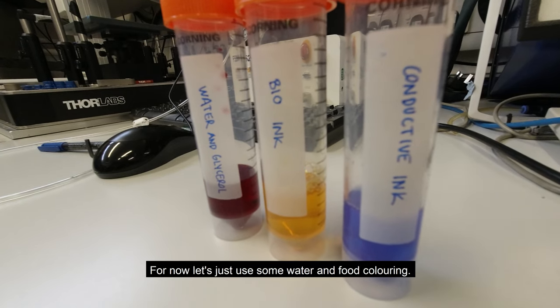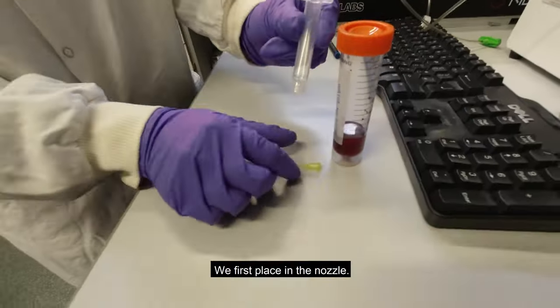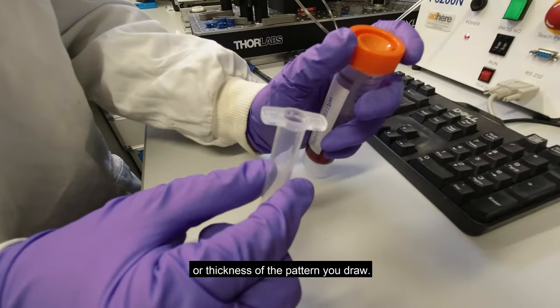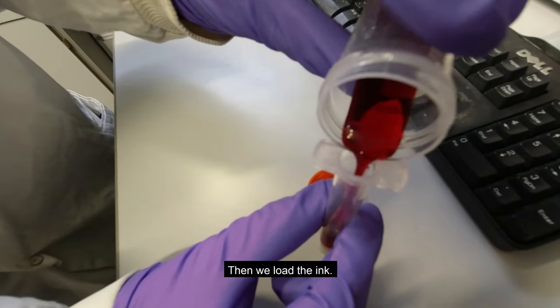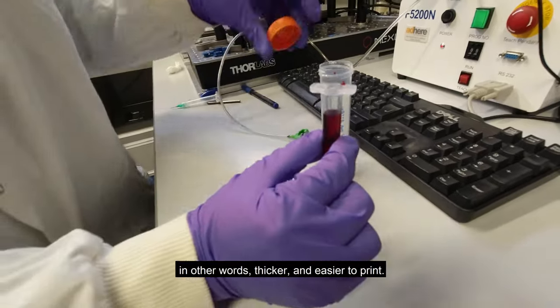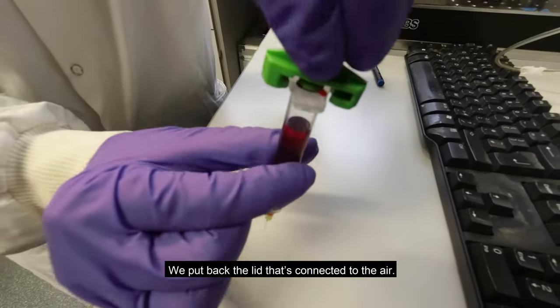For now, let's just use some water and food coloring. This is normally used as a control ink. We first place a nozzle. Different sizes of nozzles give you different volumes or thickness of the pattern you draw. Then we load the ink. The ink has glycerol to make it more viscous, in other words, thicker and easier to print.